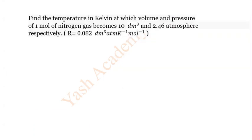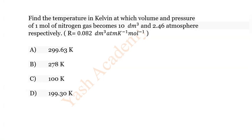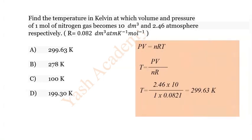Question 24: Find the temperature in kelvin at which the volume and pressure of one mole of nitrogen gas become 10 dm³ and 2.46 atm respectively. Options: A) 299.63 K, B) 278 K, C) 100 K, D) 199.30 K. The correct answer is A) 299.63 K.